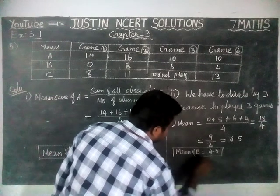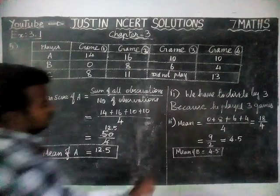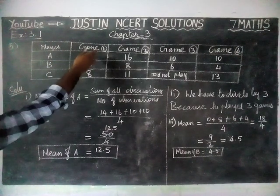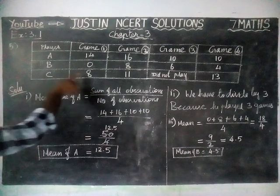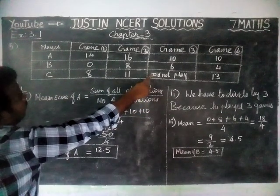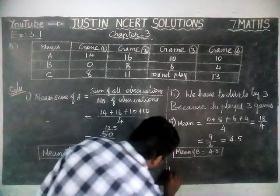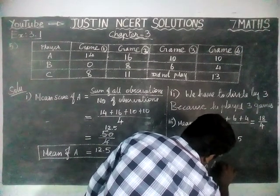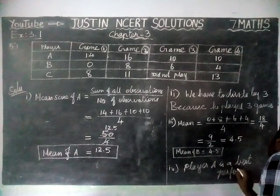4th question: who is the best performer? Player A participated in 4 games and scored good runs in all 4. Player B played 4 games but got 0 in one and single digits in the rest. Player C played 8, 11, and 13, but did not play the 3rd game. The best performer is player A, with a mean score of 12.5. Therefore, player A is the best performer.